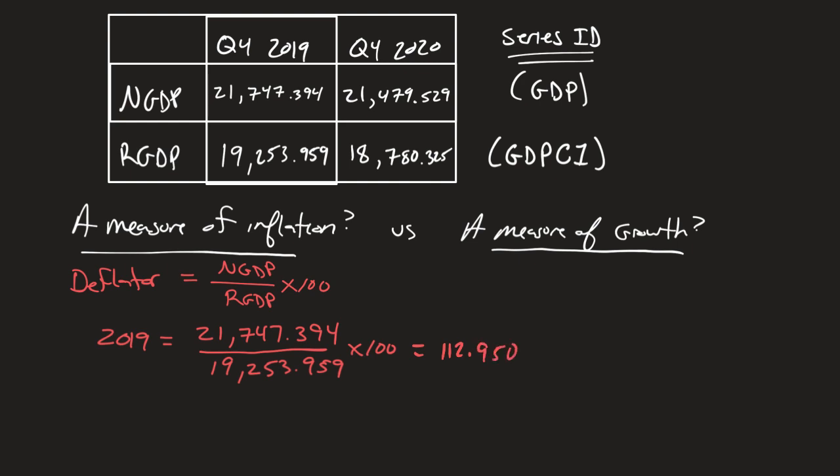So that will be my deflator in 2019. We go ahead and do the same thing in 2020. We are going to take that ratio, we look at the nominal GDP, which is 21,479.529, and we divide that by real, which was 18,780.325. Multiply that by 100. Again, I'm using a calculator, I'm actually using Excel to show this, and we got 114.373.